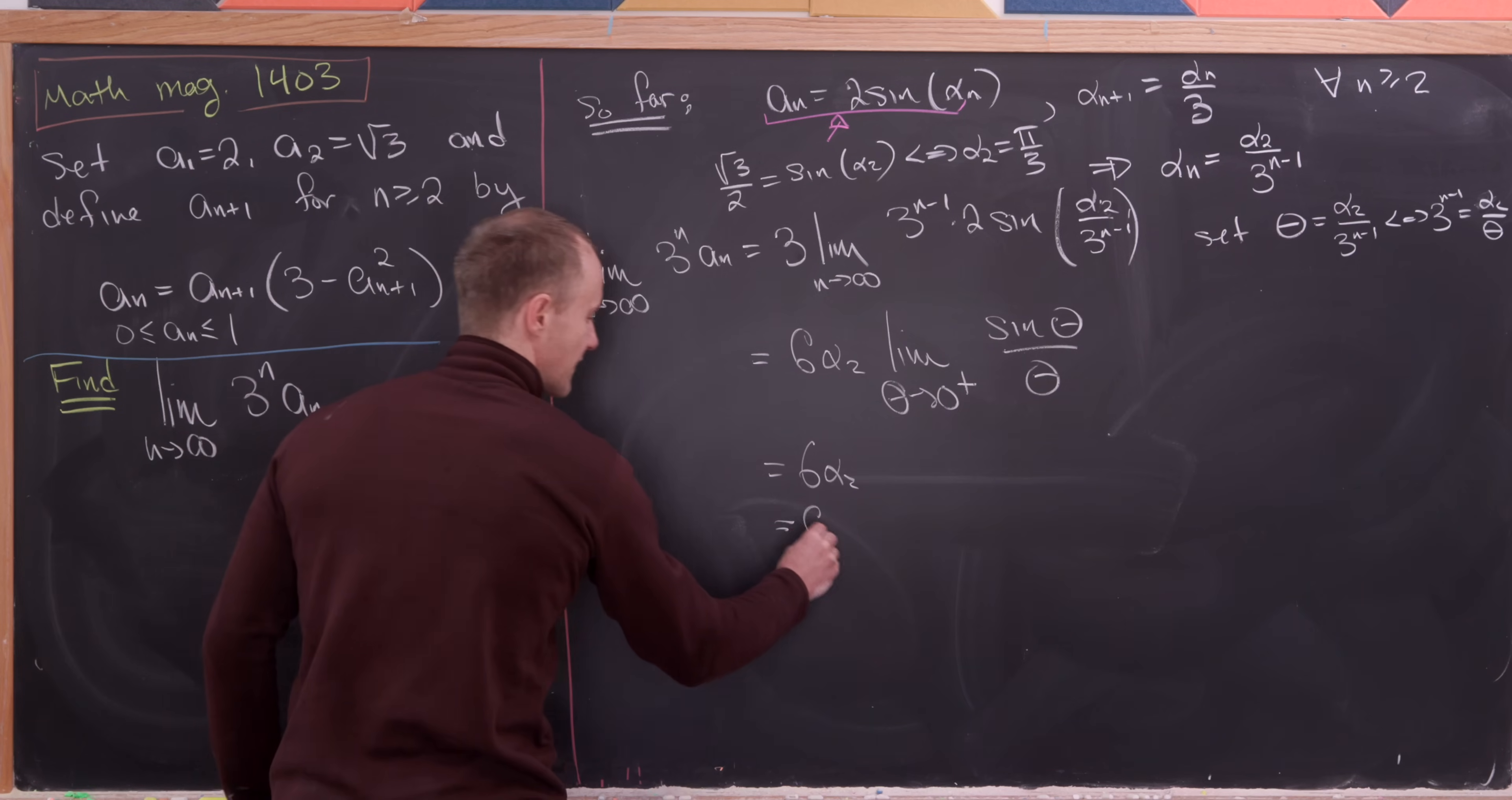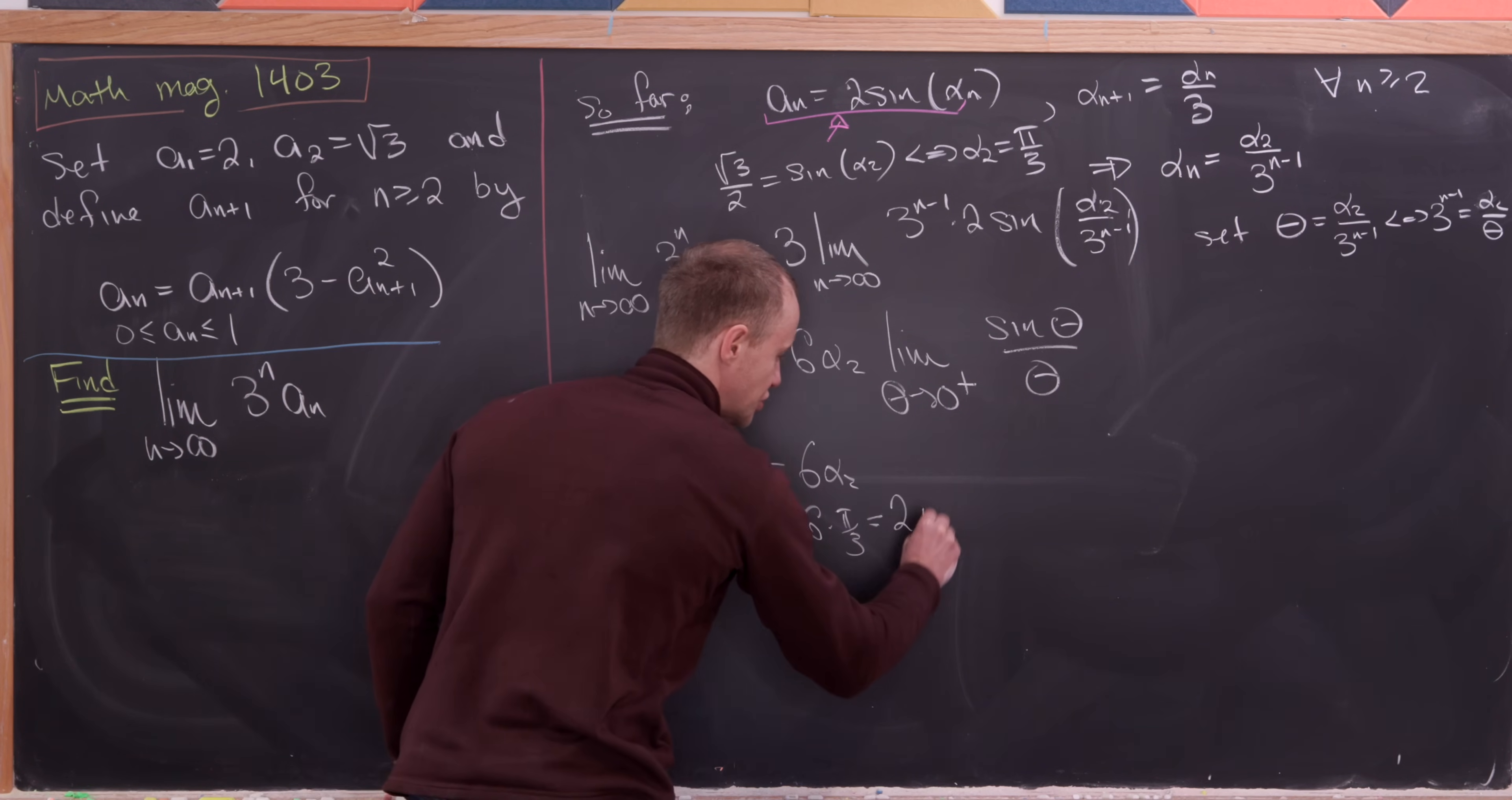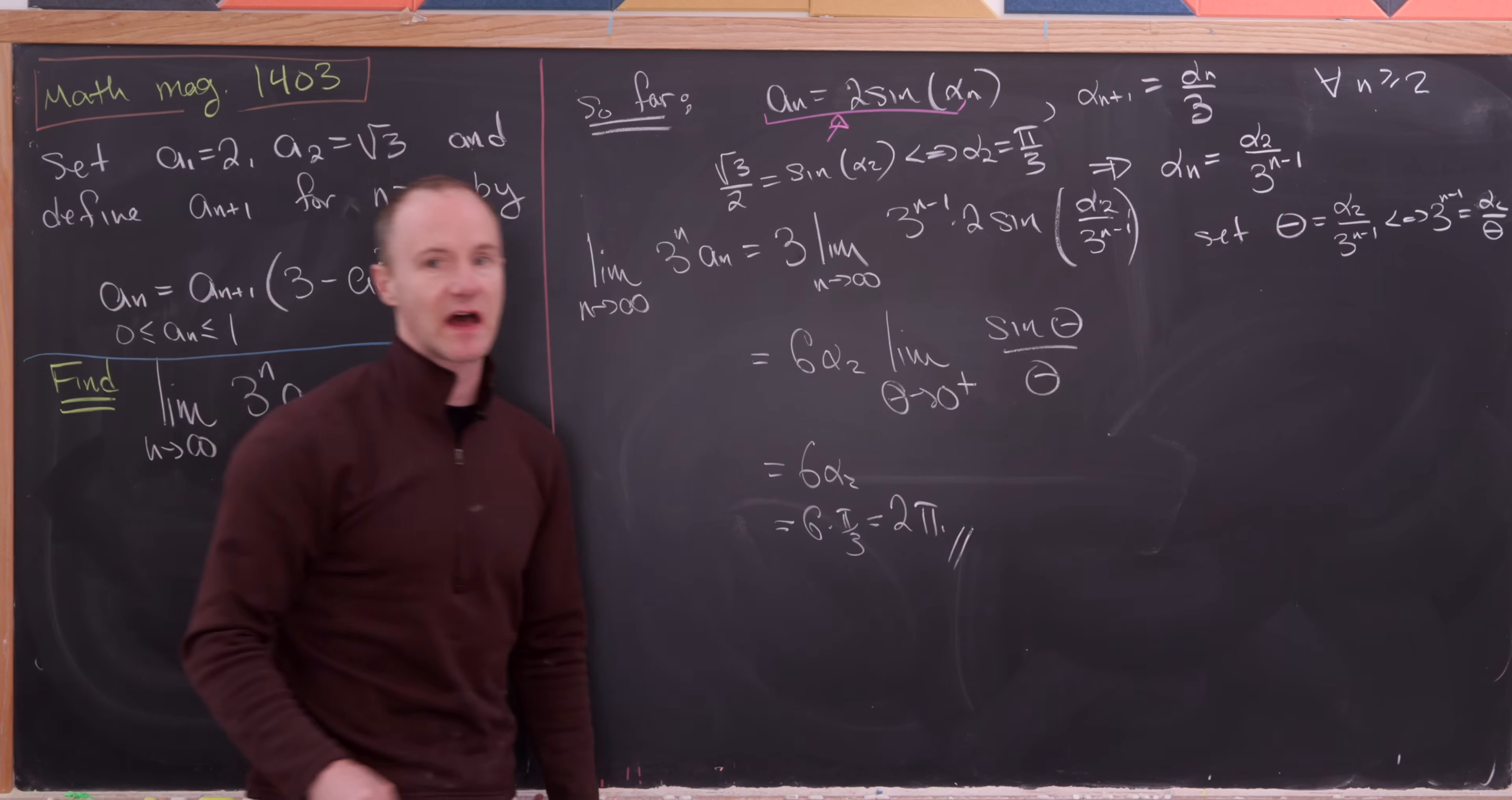So in the end we have 6 times pi thirds, or 2 pi as the value of our limit.